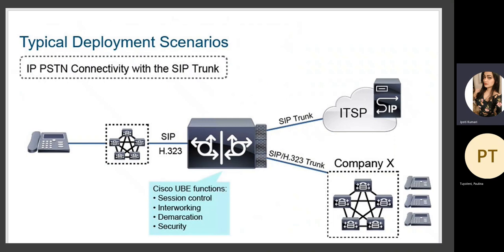In typical deployment scenarios, we have a CUBE deployed alongside a CUCM and an ITSP. We no longer commonly use PSTN connections like T1/E1. ITSP — Internet Telephony Service Provider — is the IP connection used today, similar to ISPs for data networks. If we have an ITSP connection with a SIP trunk from our site, and another company connected via SIP or H.323 trunk, a CUBE device can be placed there to perform session control, internetworking, demarcation, and security — acting as a firewall.